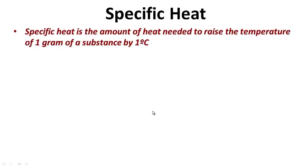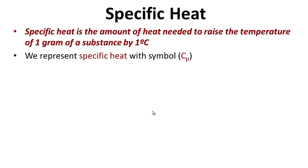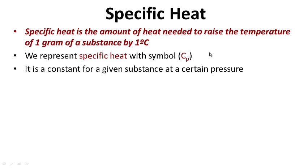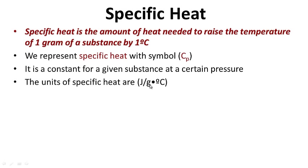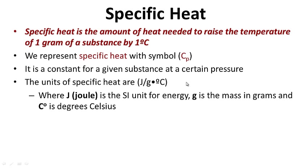Specific heat, if we define it, is the amount of heat needed to raise the temperature of one gram of a substance by one degree Celsius. We represent specific heat with the symbol C subscript P. It is a constant for a given substance at a certain pressure — like density for aluminum or iron. The units of specific heat are joules divided by grams times degrees Celsius. The joule, J, is the SI unit of energy. G is the mass in grams of a substance, and C is degrees Celsius.